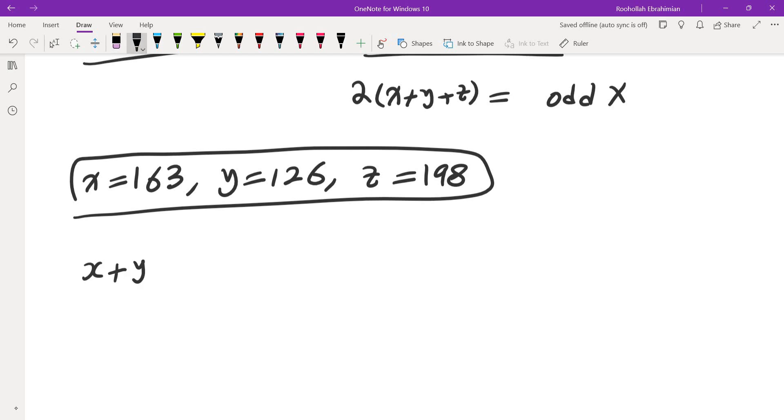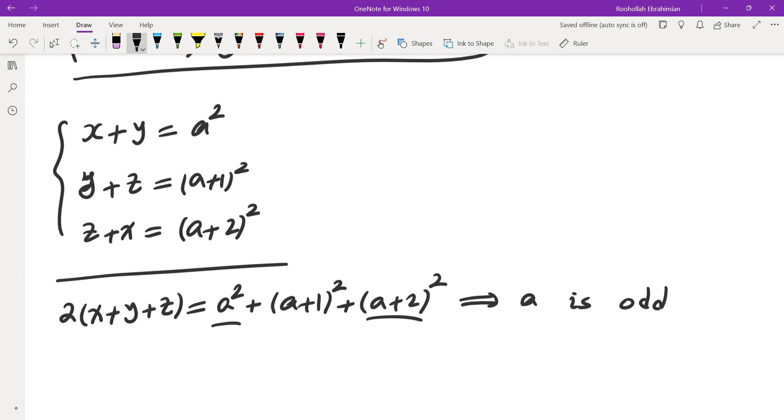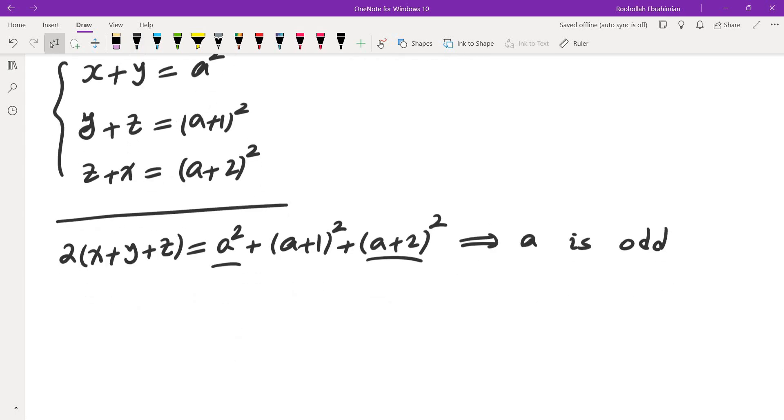In general, I'm going to take x plus y equals a squared, y plus z equals a plus 1 squared, and z plus x equals a plus 2 squared. Now, if you add these up, you'll get 2 times x plus y plus z equals a squared plus a plus 1 squared plus a plus 2 squared. This is even, so that tells us that a is odd, because you need two of them to be odd, and one of them to be even. If a is even, that would not be even.